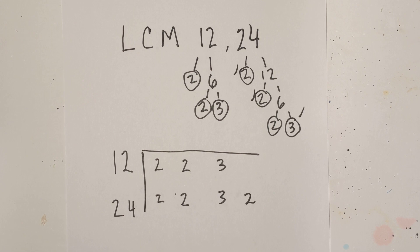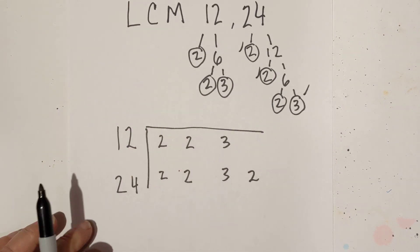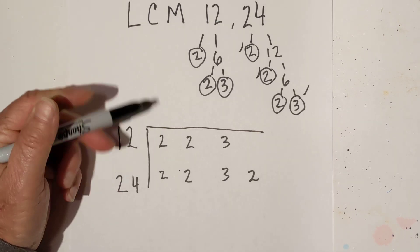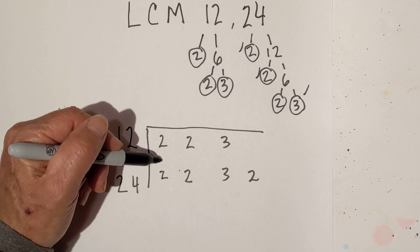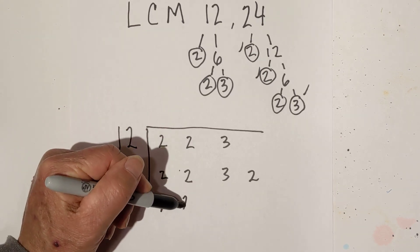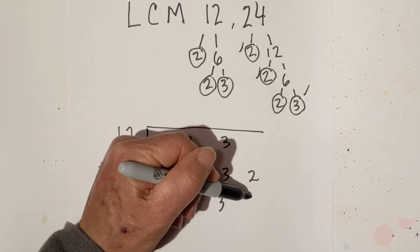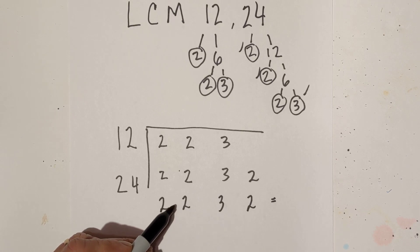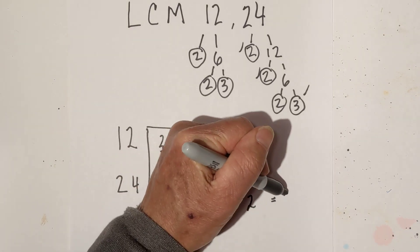Now all I do is I bring down — basically I multiply these numbers together, but I use this rule: if you have more than 1 in a column, just bring down one number. So I have 2 in this column, so I'm going to bring down 2. 2 in this column, bring down a 2. 2 in this column, just bring down a 3, and a 2. So we have 4, 12, 12 times 2 is 24.